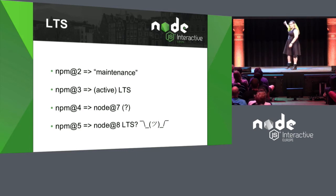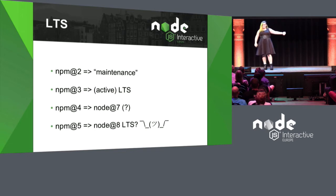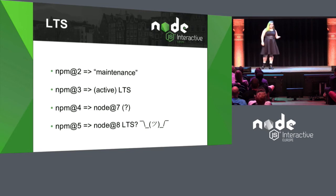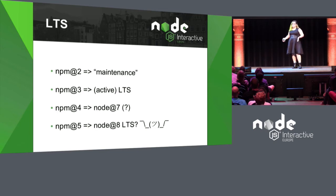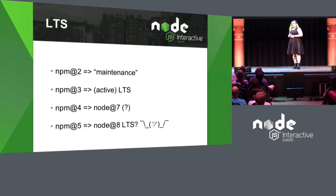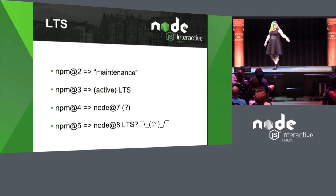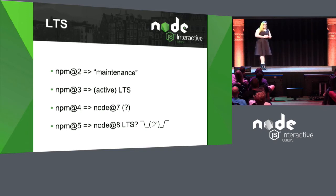Once NPM 4 comes out: we're moving NPM 2 to maintenance — only major security vulnerability patches. NPM 3 becomes our new active LTS, going into Node 6, reliable and around for a while, with patches but no new features. NPM 4 should go into Node 7. By the time NPM 5 comes out, it should be around time for Node 8.